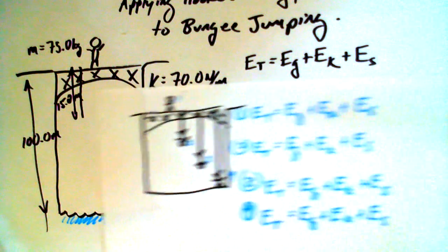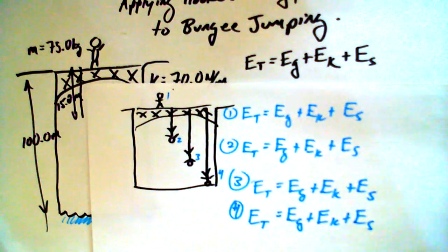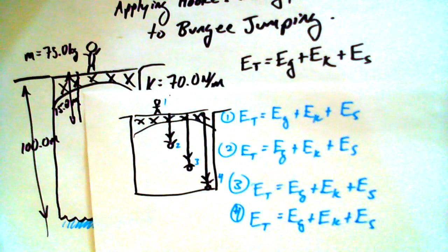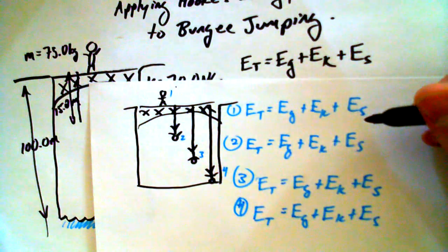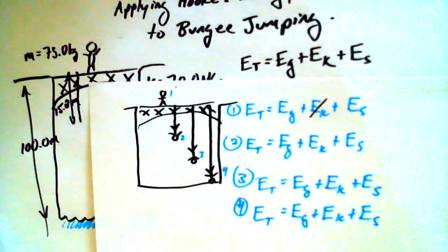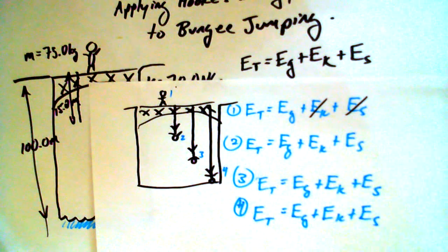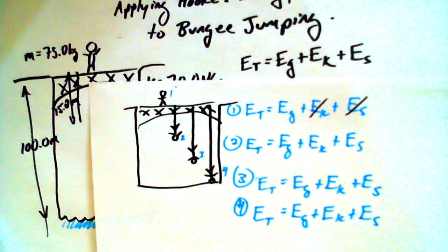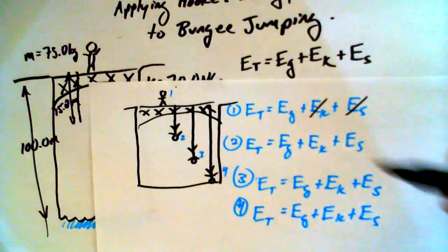We're going to assume there's no air drag. Let's look at scenario one. Does anything zero out? EK zeroes out — we haven't jumped yet. So E total equals gravitational potential energy. That's a good starting point, because we start at a particular height. If I know that value, I know the total mechanical energy. Without drag, we don't have efficiency issues — we can just know what E total is from the start.